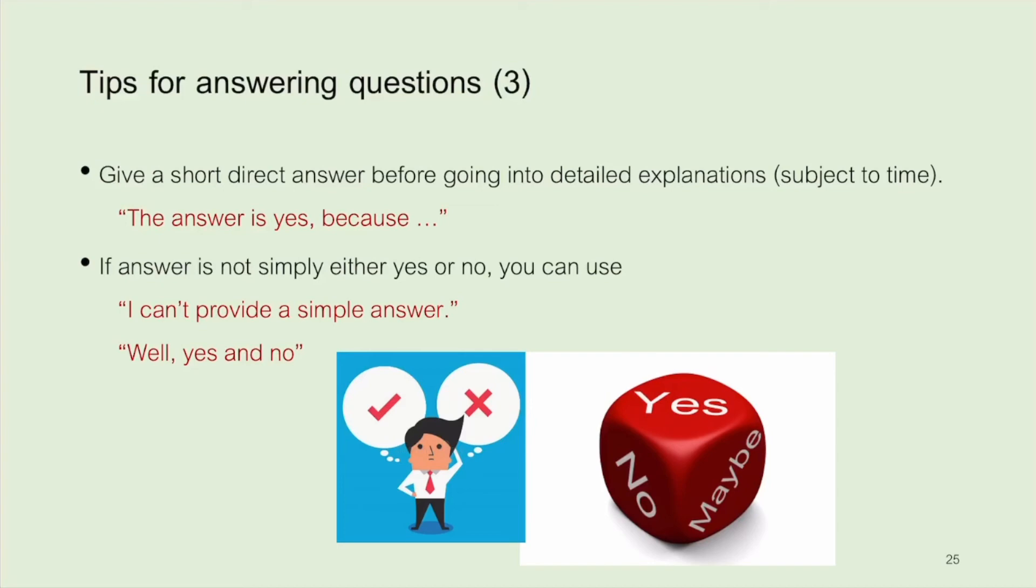Often questions cannot be answered with a simple yes or no. For example, when the data are not conclusive enough to indicate a yes or a no to a certain question. If the answer is not simply either yes or no, you can use... I can't provide a simple answer or... Well, yes and no. And then you have to provide reasons why you say so. Although these expressions do not seem to contain a lot of useful information, the audience will learn that the situation is not simple and will be prepared to hear the complicated story that follows.